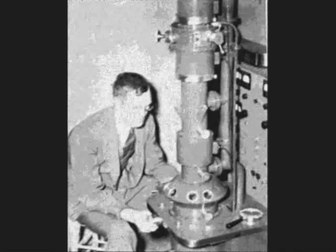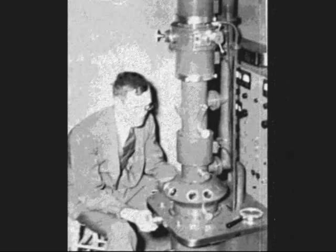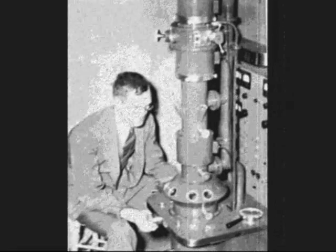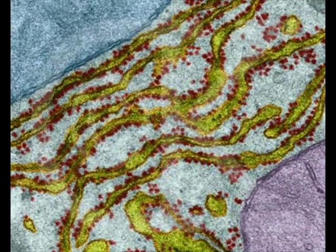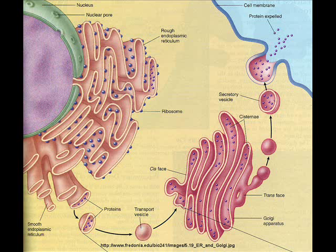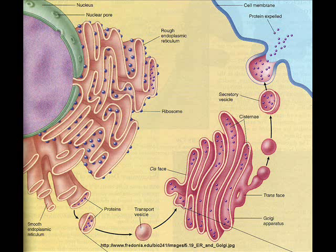In 1945, Keith R. Porter, Albert Claude, and Ernest F. Fullam published the first electron micrograph of a cell. Small organelles such as the endoplasmic reticulum and the Golgi apparatus became visible for the first time.